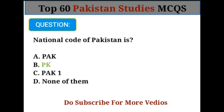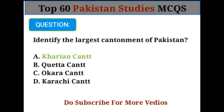National code of Pakistan is Option B: PK. Identify the largest cantonment of Pakistan. Option A: Kharian Cantt.